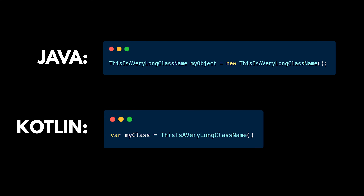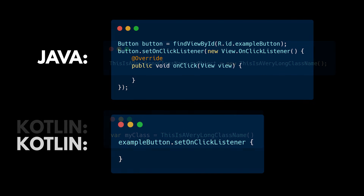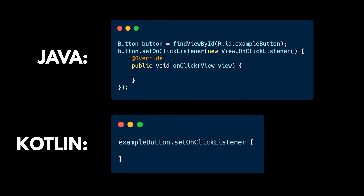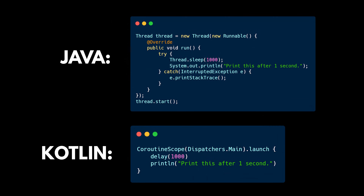When it comes to setting on-click listeners on buttons in Android development, the Java code looks very complex in comparison to the Kotlin code. As you can see, in Kotlin you don't even have to instantiate your views with findViewById — instead you can just call them immediately with their ID.